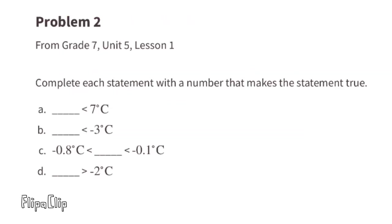Problem 2 from 7th grade Unit 5, Lesson 1: complete each statement with a number that makes it true. Part a: we can put any number less than 7 degrees Celsius. For example, 5 is less than 7, so we can put 5: '5 degrees Celsius is less than 7 degrees Celsius.' Part b: we can put any number less than negative 3 degrees Celsius.